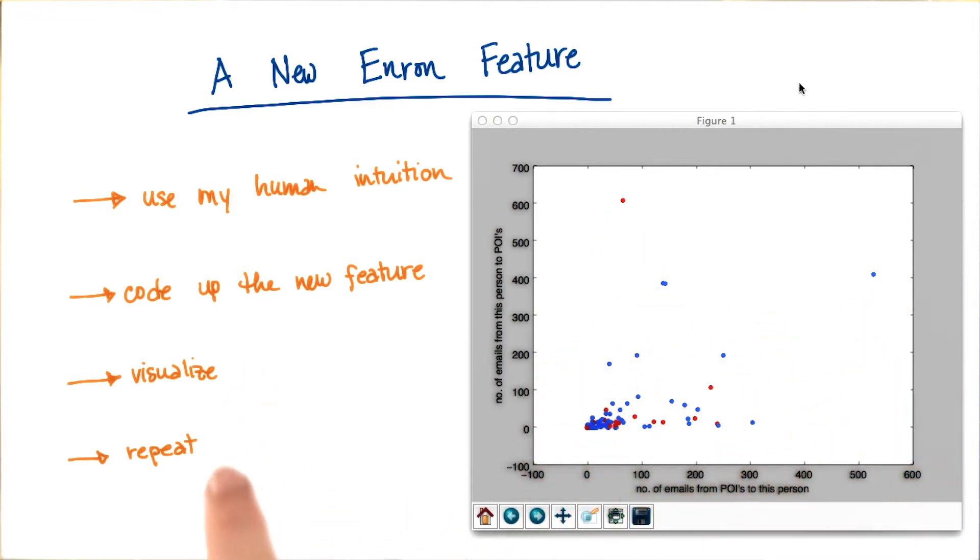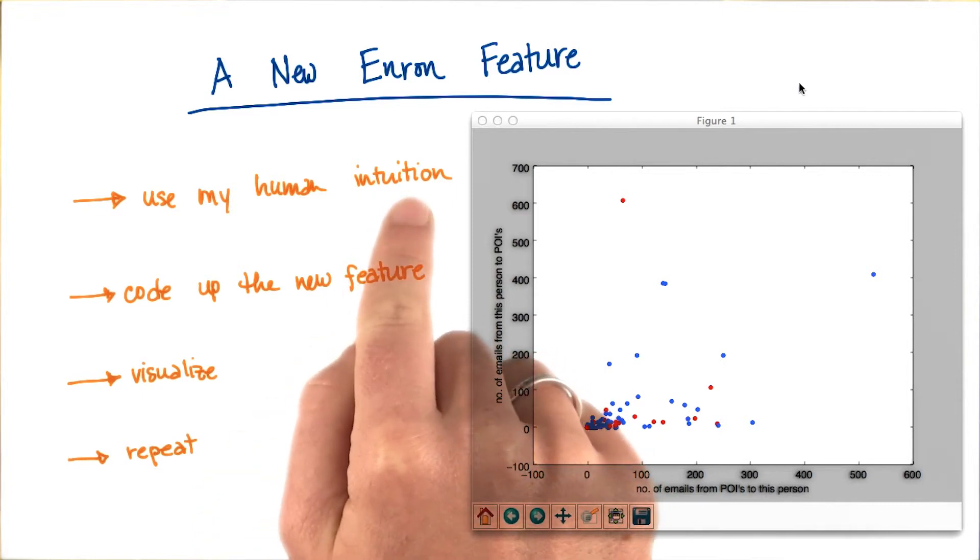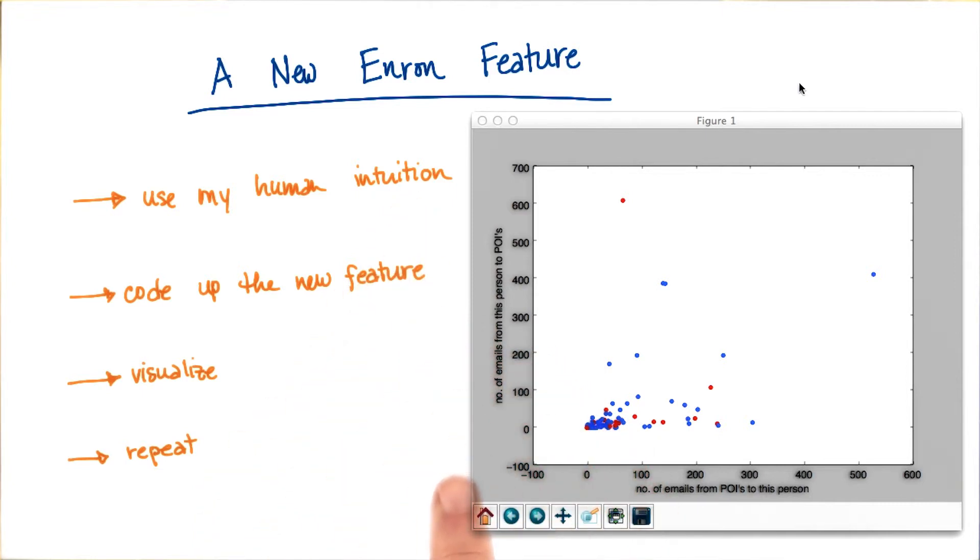So this visualization leads me into the next step of repeating this process, using my human intuition to think about what features might be valuable here.